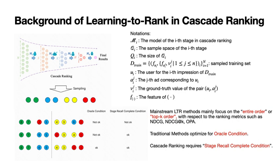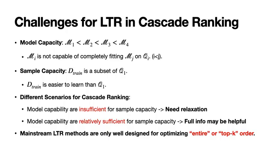Traditional learning to rank methods often focus on the entire or top K order. When we directly adopt these methods, we actually drive the system towards the oracle condition, which is more strict than the requirement to achieve the business goal for cascade ranking. A fact in cascade ranking is that model capacity typically increases from the front to the end stages. Thus, it may be impossible for a stage to completely fit its post stage. In many cases, the model capacity is insufficient. For insufficient capacity, we need to relax the learning target to make sure the optimization is towards what we really want.